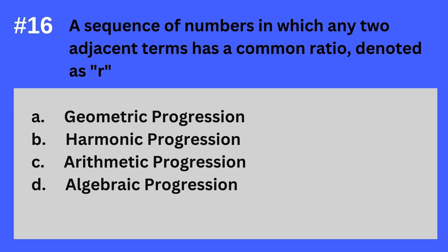Question 16. A sequence of numbers in which any two adjacent terms has a common ratio, denoted as R. A. Geometric progression. B. Harmonic progression. C. Arithmetic progression. D. Algebraic progression. The answer? It's A. Geometric progression. A sequence of numbers in which any two adjacent terms has a common ratio denoted as R — Geometric progression.